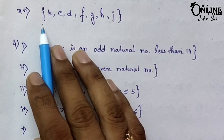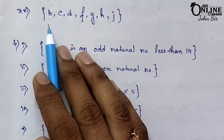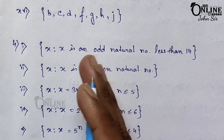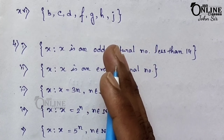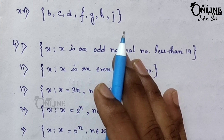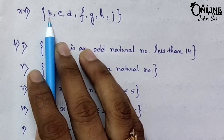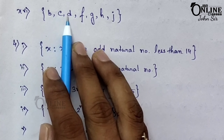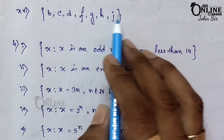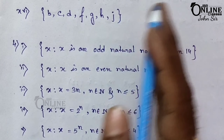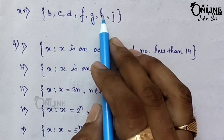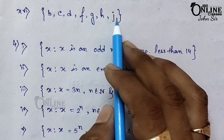XVI: x such that x is a consonant in the English alphabet which precedes K. That means all consonants before K. Starting from A — A is a vowel, so skip. B is a consonant, then C, D — E is a vowel, skip — F, G, H — I is a vowel, skip — then J. K comes next so J is the last. The answer is {B, C, D, F, G, H, J}.